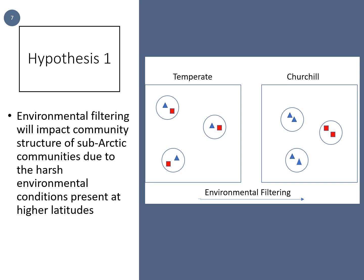I hypothesized that environmental filtering would impact community structure of subarctic communities due to the harsh environmental conditions present at higher latitudes. Because of the higher environmental filtering occurring at these higher latitudes, only species that possess the traits needed to survive here will be found. Therefore, I would expect Churchill to be more clustered than the temperate region of Guelph.